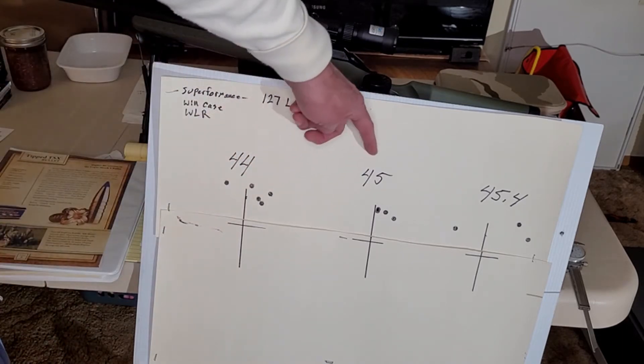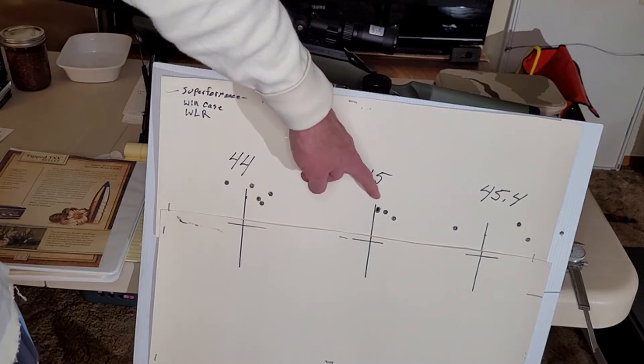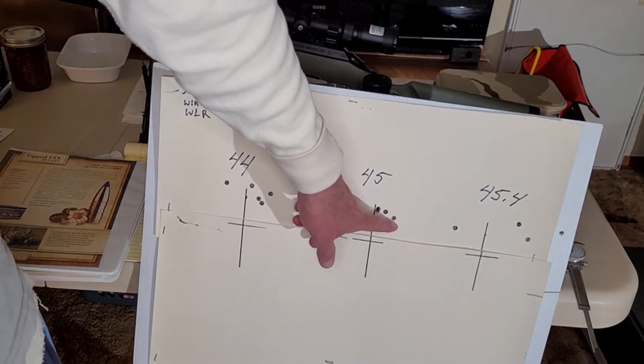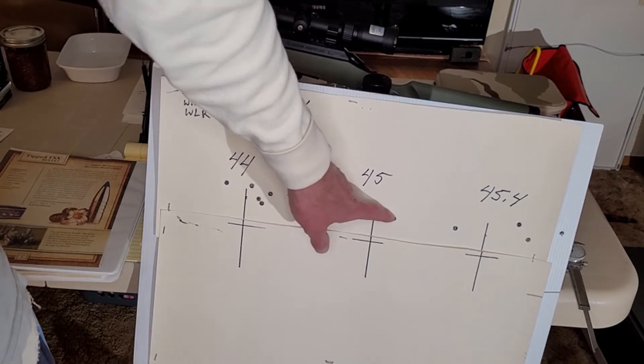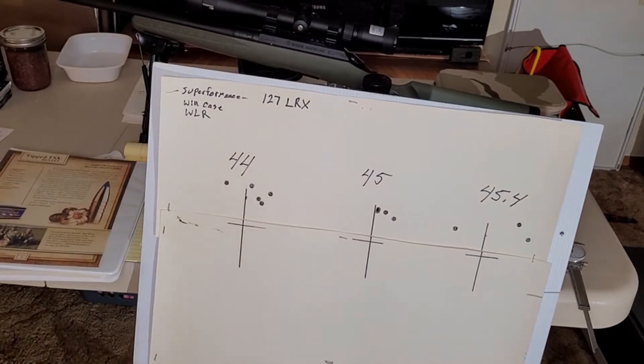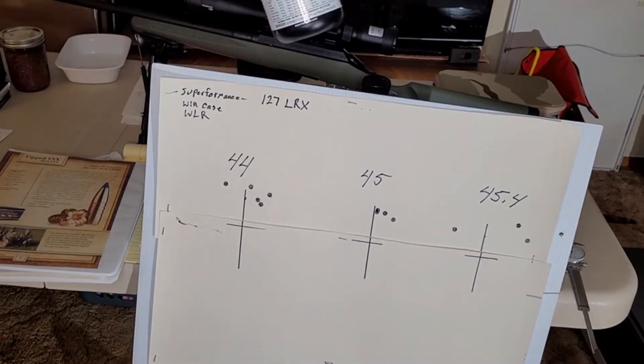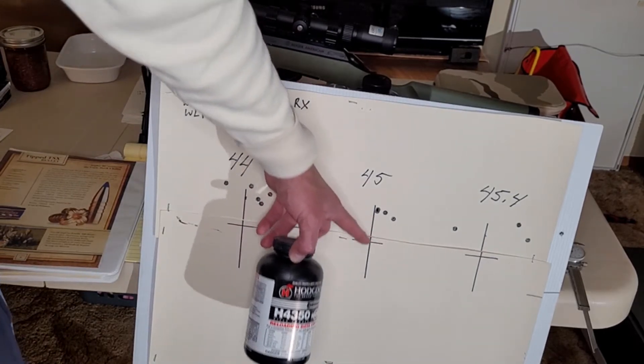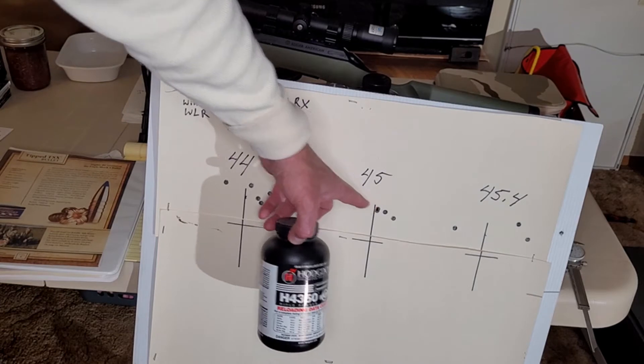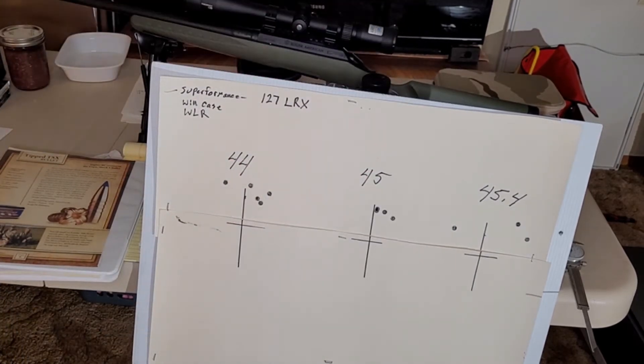Then I went to 45 grains. That is five shots and I pulled that one. So we have four bullet holes right there. Awesome group. This rifle was zeroed for 43.50, we go to Super Performance, look at the elevation difference and the only change was powder.